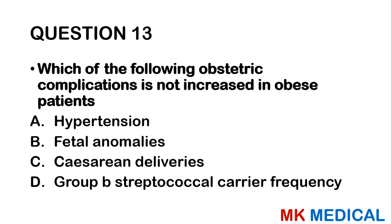Question 52: Levonorgestrel intrauterine system is: A — non-hormone-releasing IUCD. B — a hormone-releasing IUCD. C — a barrier method. D — a behavioral contraceptive. E — does not cause amenorrhea. Levonorgestrel is a type of progesterone, making this a hormone-releasing intrauterine device. The answer is B.